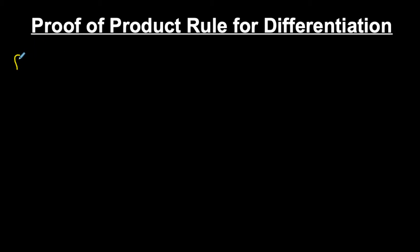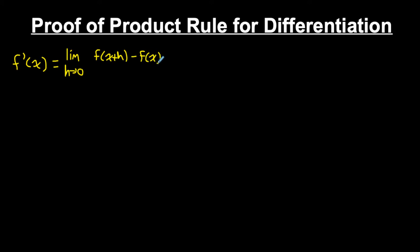Here's a nice proof for the product rule for differentiation. If we have a product of two functions, we need to be able to differentiate them. The proof is going to involve Newton's quotient, which tells us that the derivative of any function f at x is equal to the limit as h goes to zero of f(x+h) minus f(x), that's our change in y, all over h, that's our change in x. Using this, let's come up with an equation for the derivative of a product of two functions.